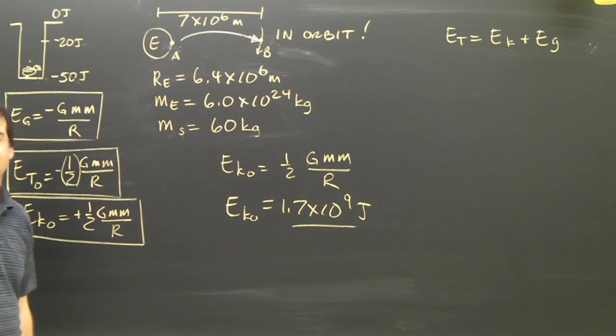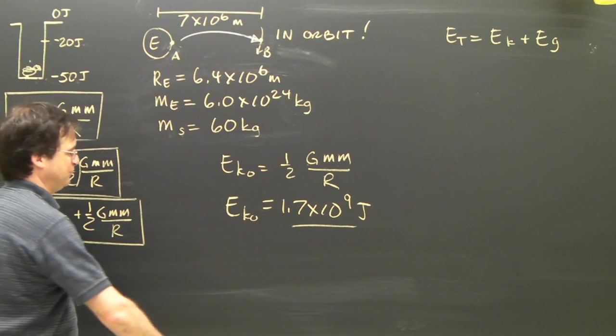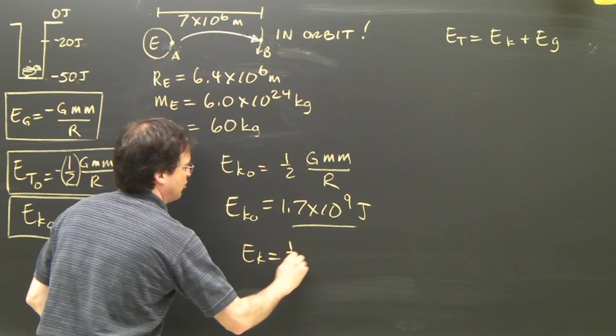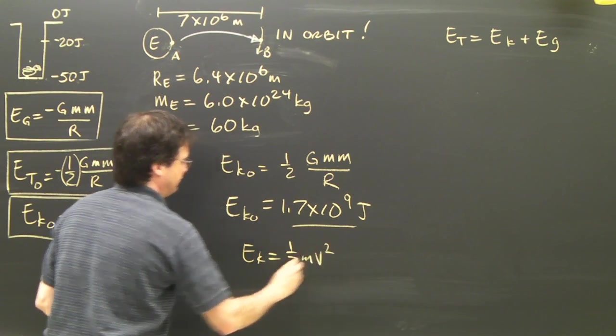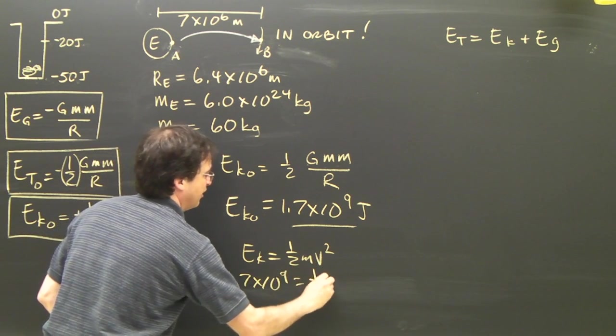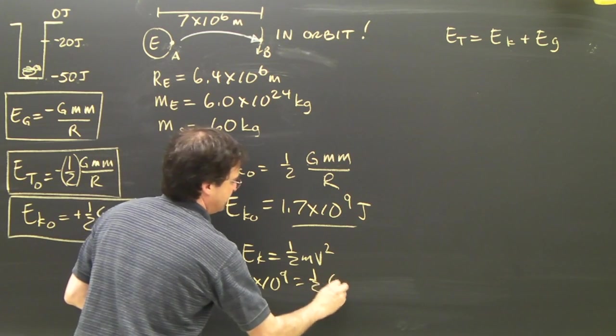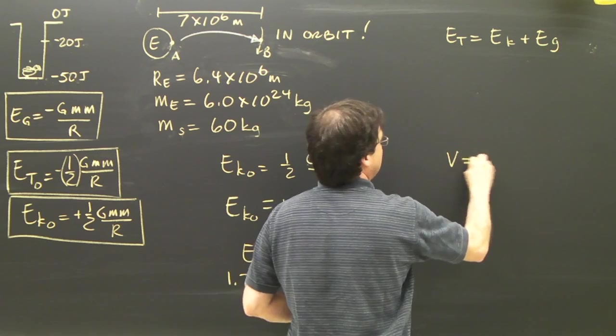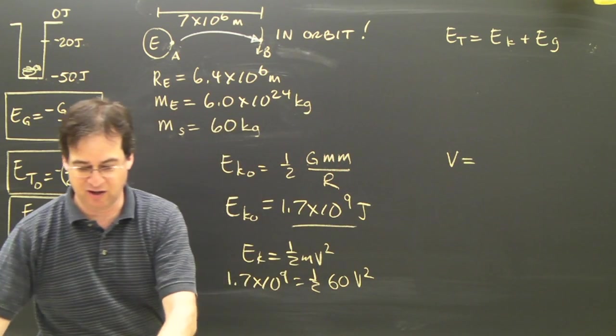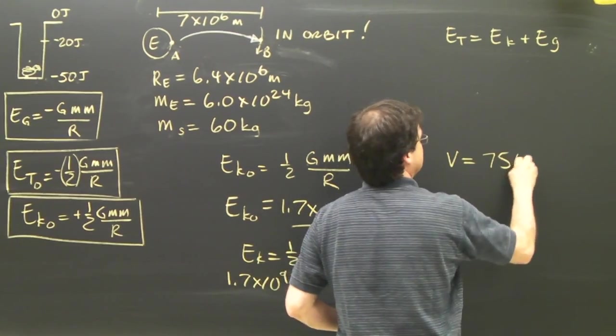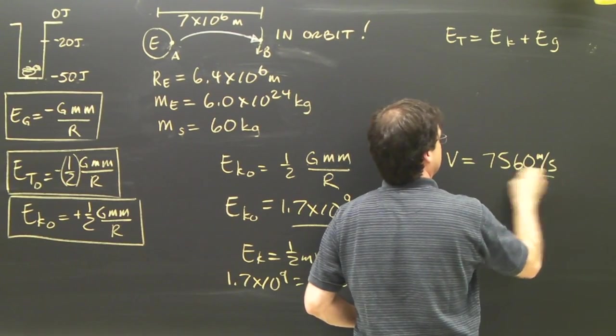Very easy to calculate. Now, to find the velocity, we set the kinetic energy equal to one-half mv squared. So 1.7 times 10 to the 9 equals one-half times 60 times v squared.